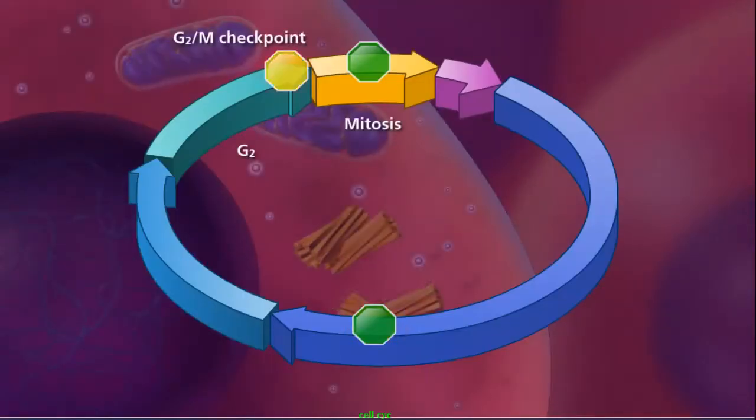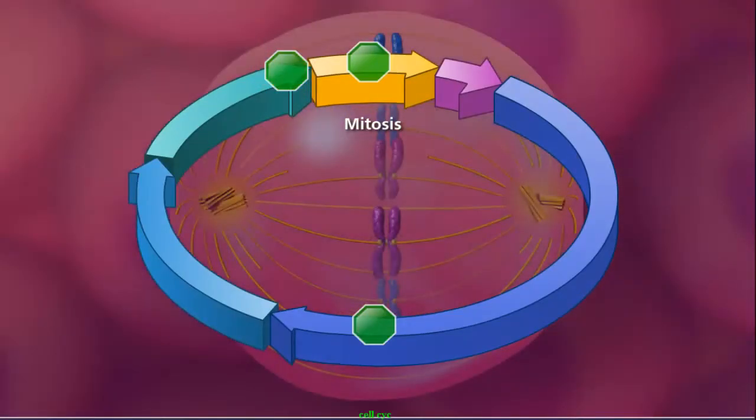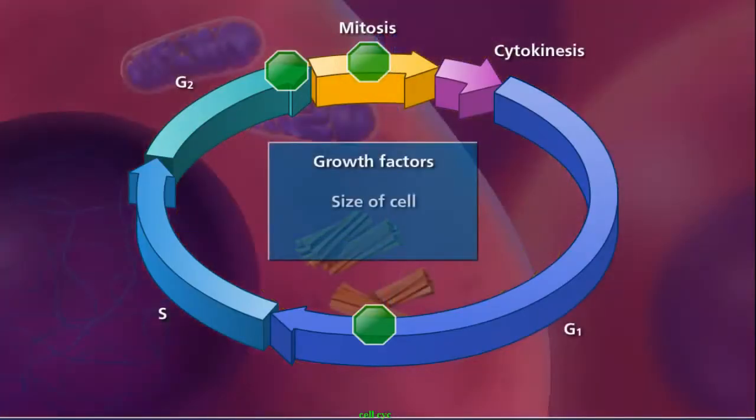The G2M checkpoint allows cells that have successfully completed all three phases of interphase to begin mitosis. The last checkpoint is the spindle checkpoint, ensuring that all chromosomes have attached to the spindle in preparation for anaphase.